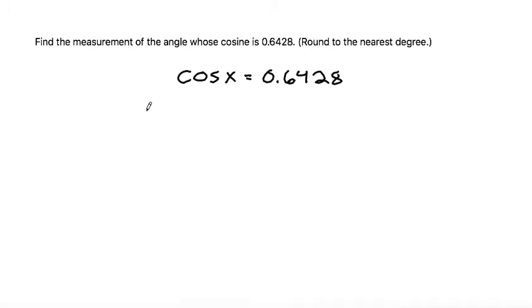So the way we do that is we write the cosine inverse of the cosine of the angle is equal to—if we take the cosine inverse of this side, we also have to take the cosine inverse of the other side.